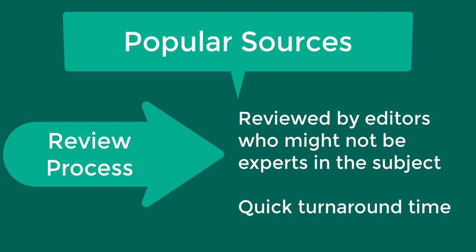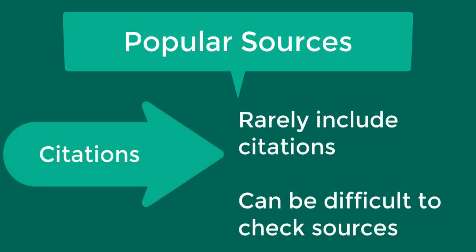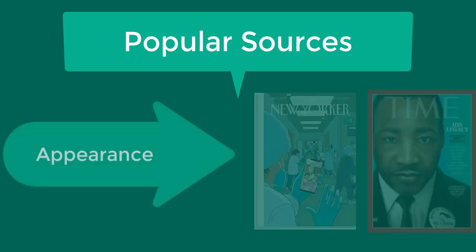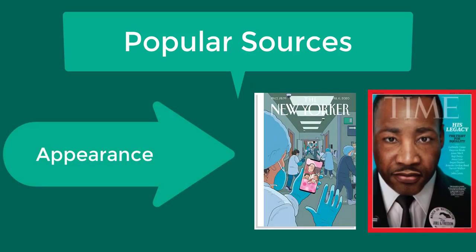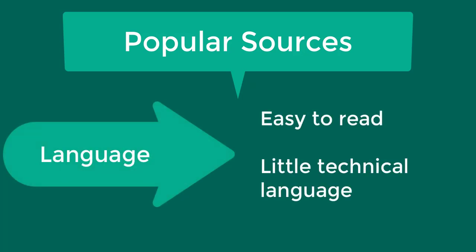If your topic requires very recent information, these types of sources may be useful to you. Another difference between scholarly and popular articles is that popular articles rarely include citations. Because of this, the reader might not know the sources where the author found their information. Popular articles' appearance also features extensive advertising and colorful covers for marketing. The language used is easy to read, little technical language is used, and specialized terms are often defined.